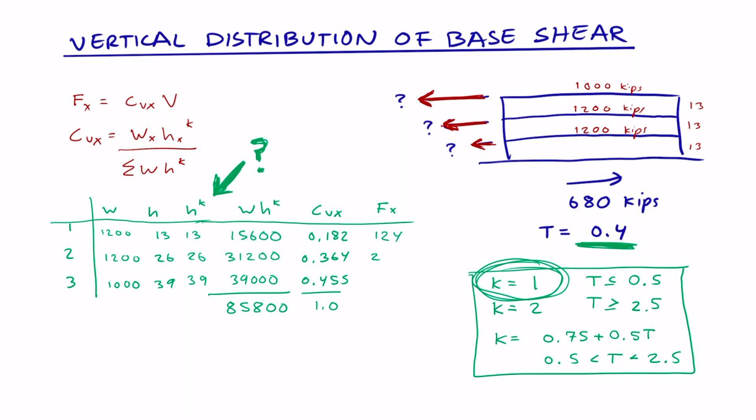We multiply CVX for each level times the total base shear. Now we've found the lateral force at each level, and it should total up to the total seismic base shear. Thanks for watching. I hope this helped you find the vertical distribution of base shear for each level of a multi-story building.